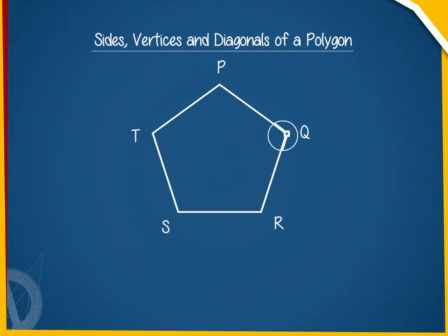The point where two adjacent sides of a polygon meet is called the vertex of the polygon.